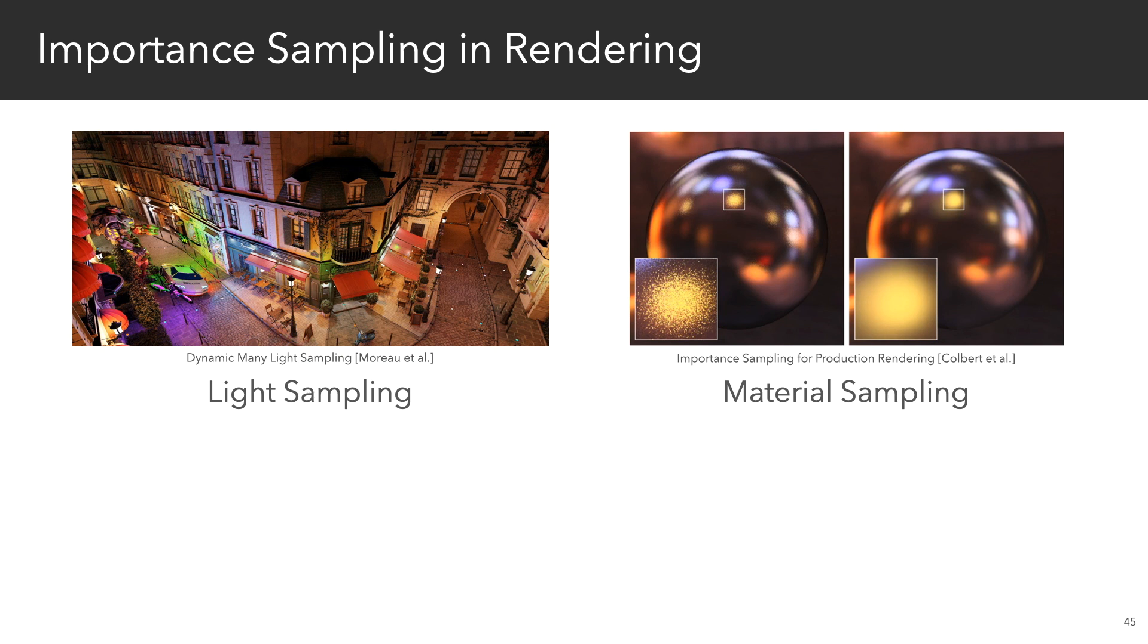In rendering, it's generally used to sample rays from distributions matching the radiance and the BRDFs. For us, sampling lights and materials is actually analogous to sampling the source terms and greens functions for PDEs with sources, such as the Poisson equation.